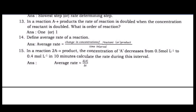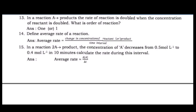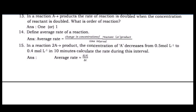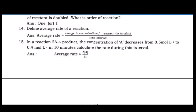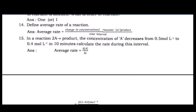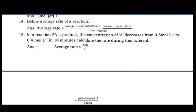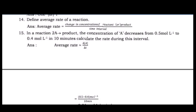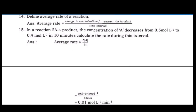Question 15: In a reaction 2A → product, the concentration of A decreases from 0.5 mol L⁻¹ to 0.4 mol L⁻¹ in 10 minutes. Calculate the rate during this interval.